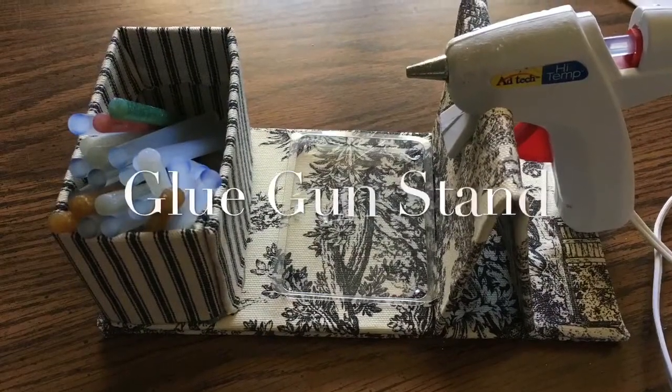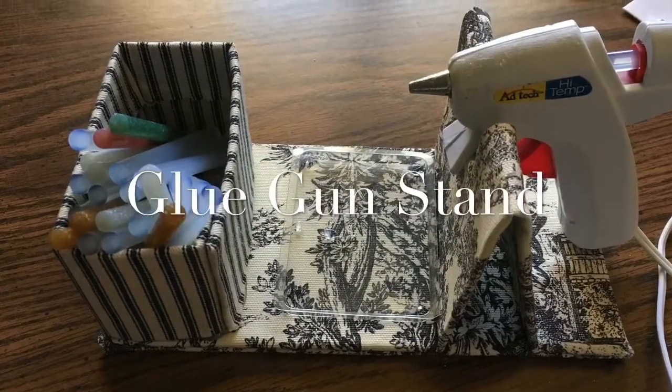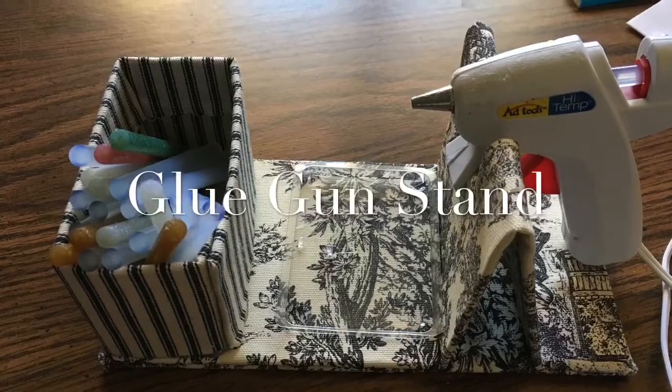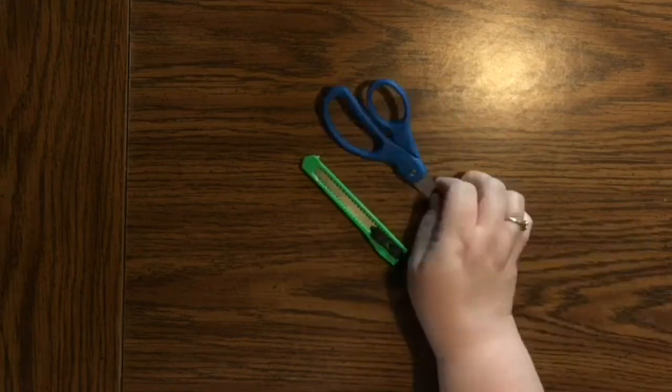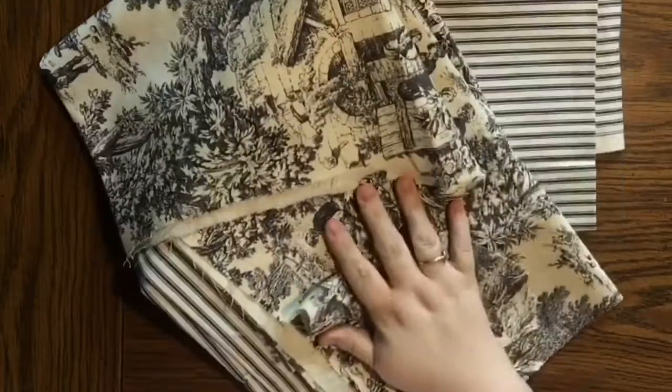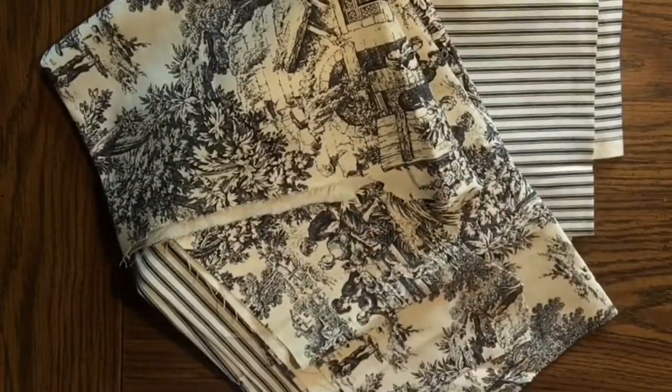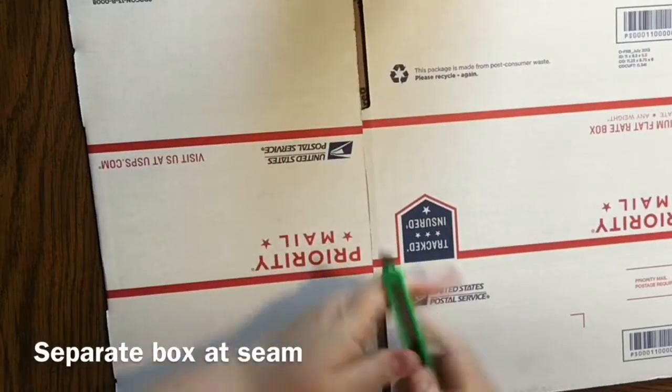Hi everybody, welcome back to my channel. Today we're going to make a glue gun stand and I'm making this entirely for free, but you might have to spend some money. First we're going to need a recycled box, I'm using this one from the post office. Some Aleene's Tacky Glue which I had on hand, a cutter and a scissor, and a hot glue gun. And then some fabric. I actually have these fabrics, I have a little bit of fabric hoard, but if you want to cover with fabric you can, and a ruler.